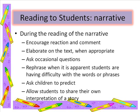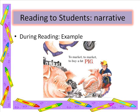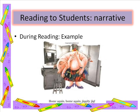While reading the narrative story aloud, encourage reaction and comment from the students. Elaborate on the text when appropriate. Ask occasional questions. Rephrase when it is apparent students are having difficulty with words or phrases. Ask students to make predictions. Allow them to share their own interpretation of the story. You can even complete Think Alouds to show students how you think and figure things out while reading. To Market to Market by Ann Miranda: 'To market to market to buy a fat pig. Home again, home again, jiggity jig.' Students, I notice that the words jig and pig rhyme. I think this book might be a rhyming book. Let's keep reading and find out if my prediction is correct. This was an example of a Think Aloud.